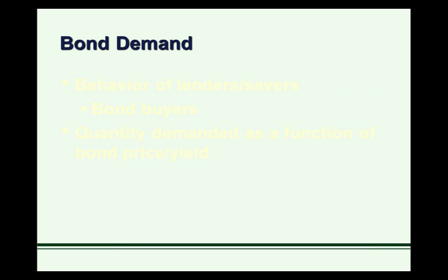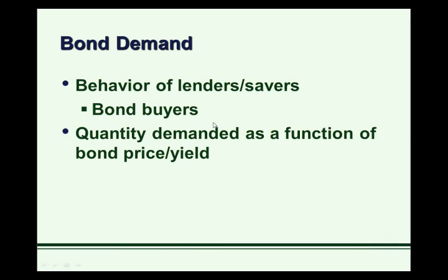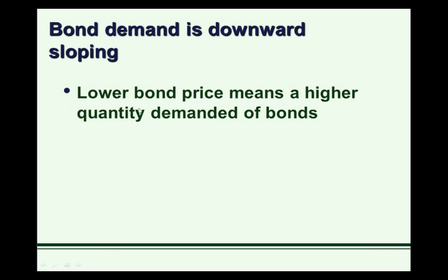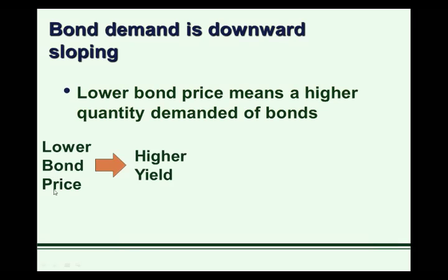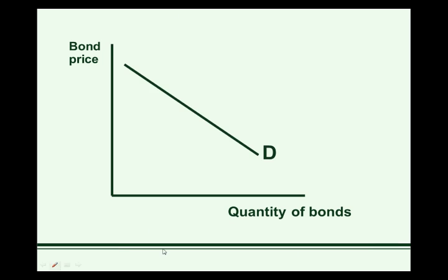Now let's look at the other side of our bond market — the bond demand curve. Bond demand is the behavior of lenders, the behavior of people that are buying bonds. People that buy bonds are giving money to others to use for their capital projects. The bond demand curve is quantity demanded as a function of bond price and yield. Demand curves are usually downward sloping, and bond demand is no exception. A lower bond price means a higher quantity demanded of bonds, because a lower bond price means a higher yield, which is a higher return to people holding bonds — so we'd see a higher quantity demanded.